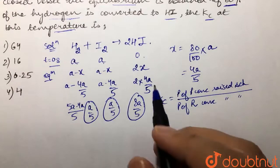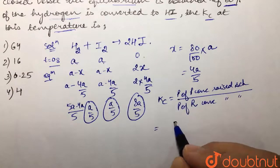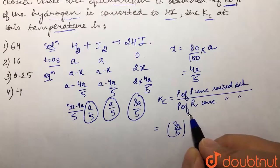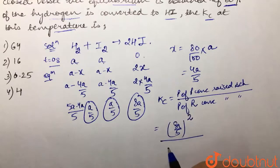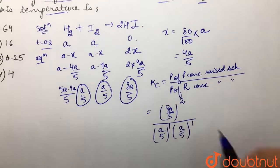Now we're going to put all the values. What's our product? HI, and its stoichiometry is 2, so it would be (8a/5) raised to power 2, divided by our product of reactant concentration which is a/5. Their stoichiometry are 1, so this would be 1 and 1.